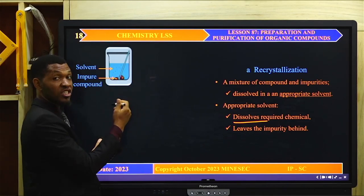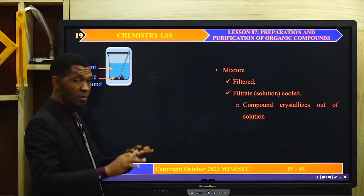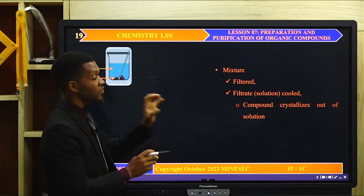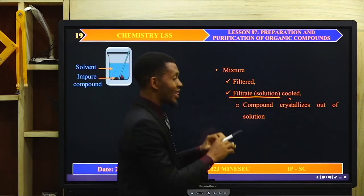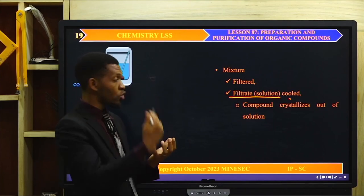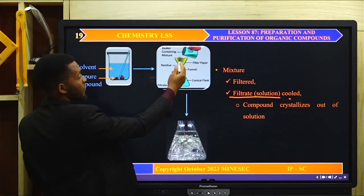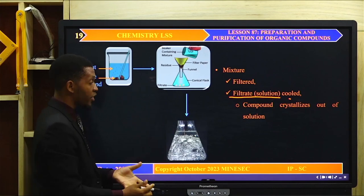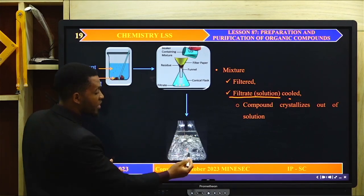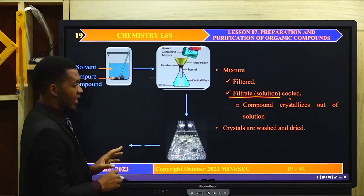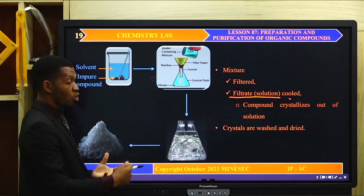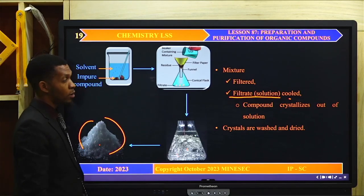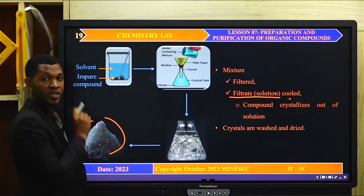Upon crystallization, the compound and the impurity will dissolve, and the impurity will remain in the course of the process. The mixture of the compound, the solvent, and the impurity is then filtered. The filtrate is cooled and the compound crystallizes out of the solution as the temperature is reduced. This filtrate is cooled down and pure crystals gradually form in the liquid. The crystals are then removed by filtration, washed, and dried to obtain pure crystals of the compound.